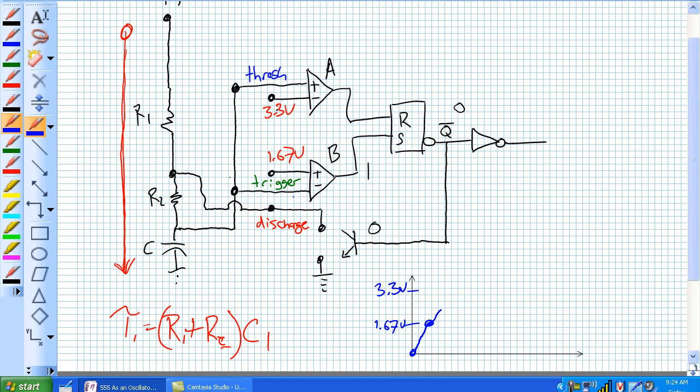So what happens when it reaches 1.67 volts? Well, look at comparator B. This minus input here suddenly becomes larger than the plus input, and the output of comparator B goes to a 0. So, since the latch was set originally, it's not going to do anything to the output, not Q, and the discharge transistor is going to still be an open circuit, and it's still going to allow it to continue to charge.